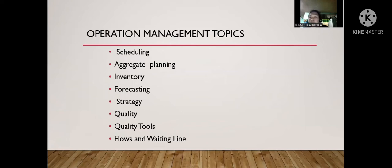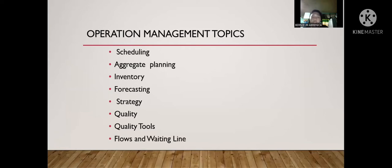Scheduling is where we plan the time and date. Aggregate planning is where we ensure there will be uninterrupted production at the facility — it means planning which materials we really need the most in order to minimize costs. Inventory refers to the stocks or the list of items.